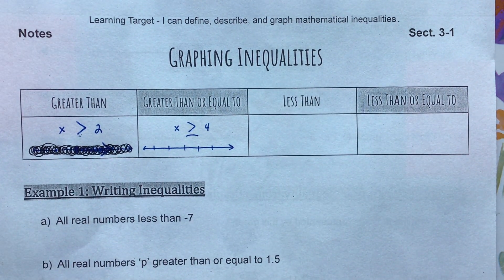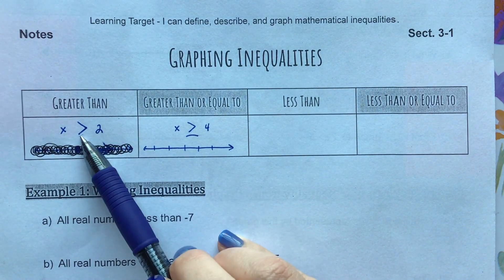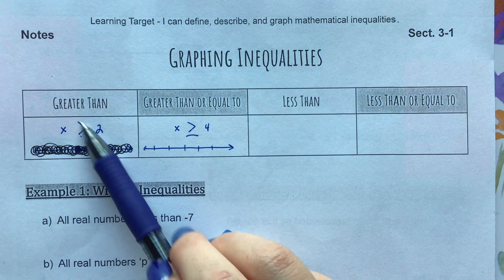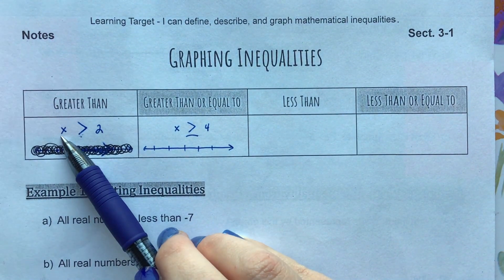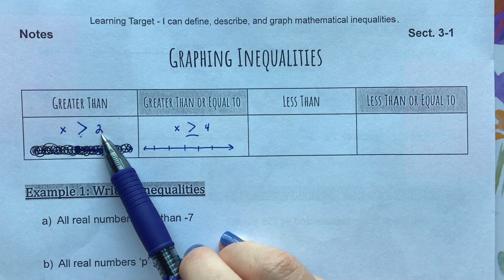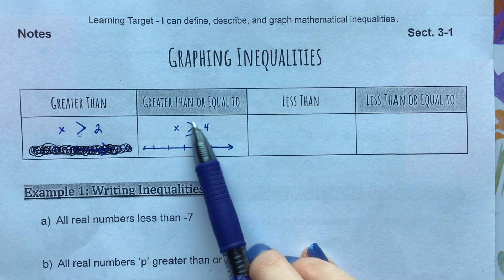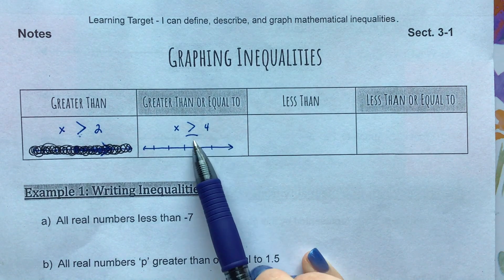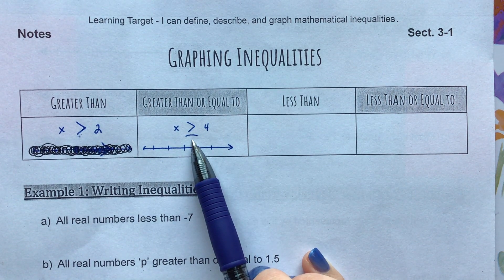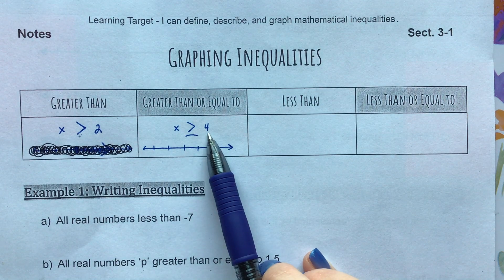The first symbol we have is the greater than symbol. Your greater than symbol is going to look like this — it has kind of an arrow pointing to the right. So just as an example, this would be x is greater than two. For greater than or equal to, it's going in the same direction, but because of the 'or equal to,' it has half of an equal bar underneath. So this would be x is greater than or equal to four.